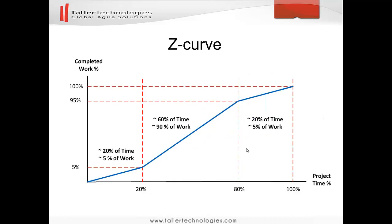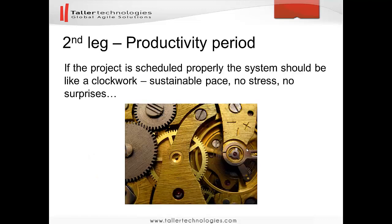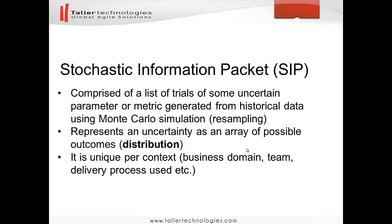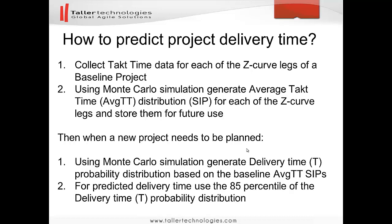Please pay attention to the z-curve and its three legs. I will go directly to the Excel simulation. This is the algorithm we will be following. The first two parts — collecting tag time data for each of the z-curve legs of a baseline project, and then using Monte Carlo simulation to generate average tag time distribution for each of the z-curve legs and storing them for future use — are covered in my previous video, so please go and check that.